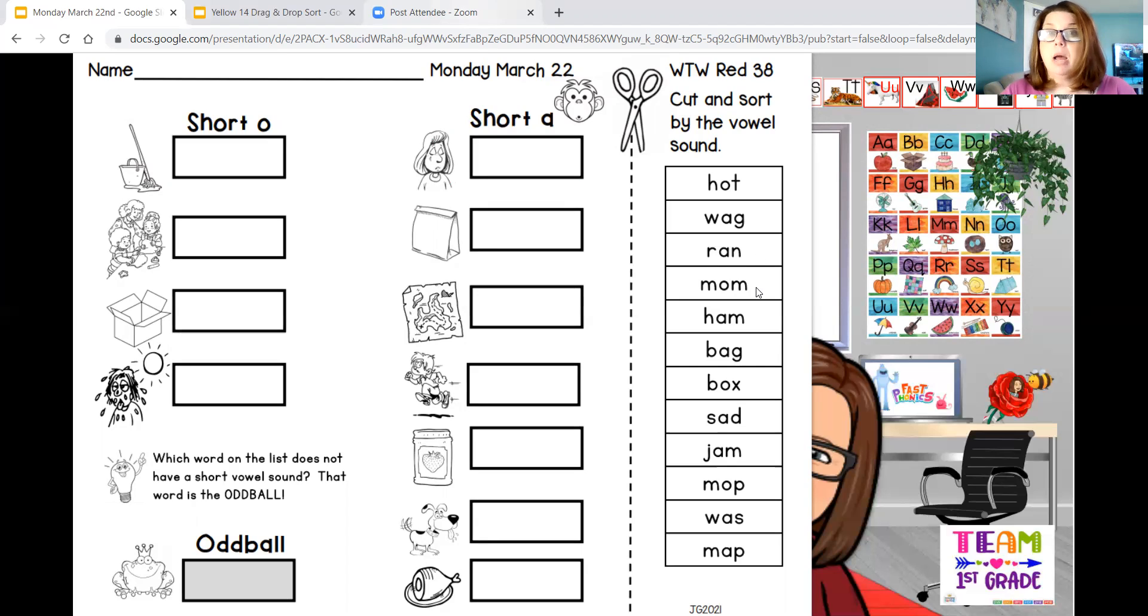The next word on our list is mom, M-O-M. Now, we know it's not going to be in the short A column. It's going to be over here on the left-hand side. There's only one picture there that reminds me of a mom. I think you can find it. All right, the next word is ham, H-A-M. Well, ham is a short A word, a word we've seen before. It's a kind of meat, right? How many of you are going to have ham on Easter? I know I am.